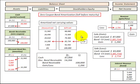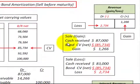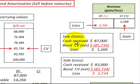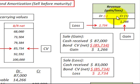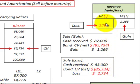When selling this bond, we have to recognize either a gain or loss in our revenue account by taking the carrying value of the bond at the time of sale and comparing it to the cash received. In the case of a gain, we received more cash than the carrying value of the bond, so we credit our revenue account. In the case of a loss, we received less cash than the carrying value of the bond, so we debit our revenue account for the loss amount.